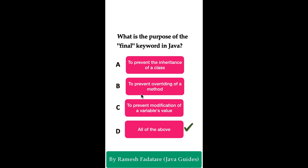Next, we can use the final keyword to prevent the modification of a variable's value. Once we define a member variable with the final keyword, we cannot assign a new value or modify that final member variable in the class.